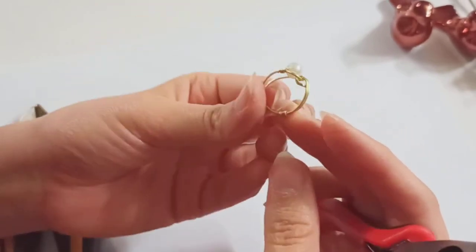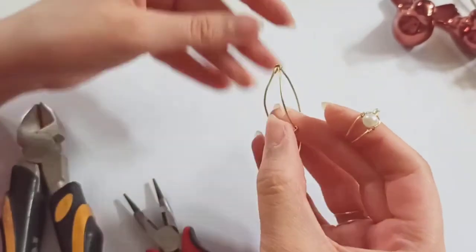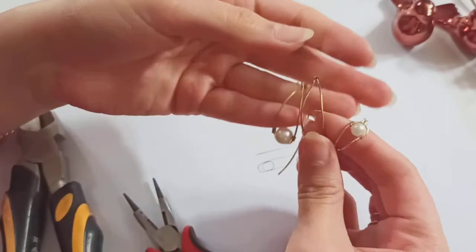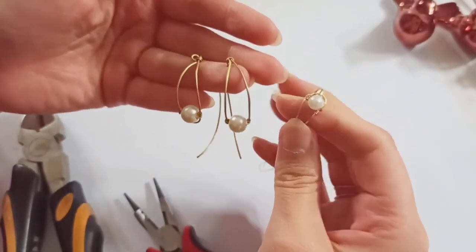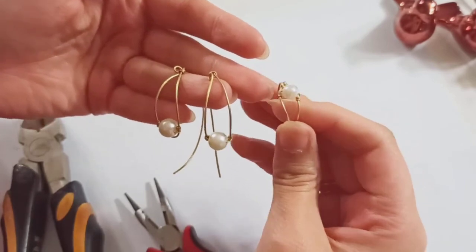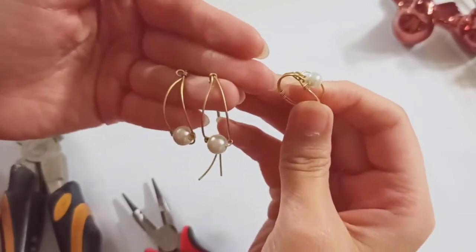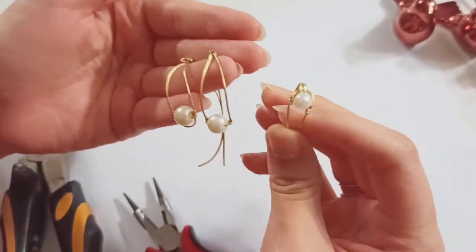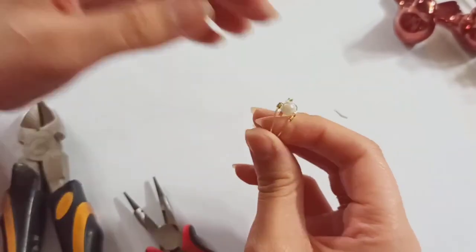And now this is your beautiful wire ring that is now a set to your wire earring that you had learned in previous tutorials. I hope you had enjoyed this tutorial and you would make one for yourself or the one that you love or for selling this beautiful wire jewelry. Take care and bye bye.